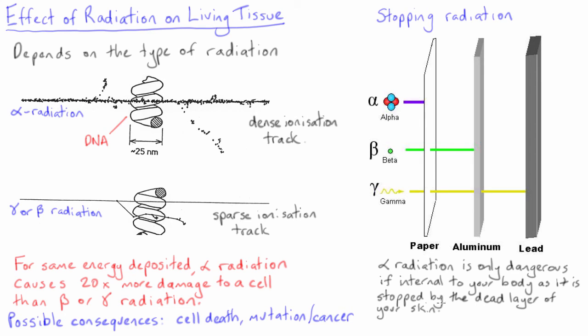In fact, it is almost impossible for an alpha decaying radioisotope to be dangerous unless the radioisotope is ingested or breathed in. However, as noted on the left, once ingested, the alpha radiation is 20 times more dangerous than the same energy of beta or gamma radiation.